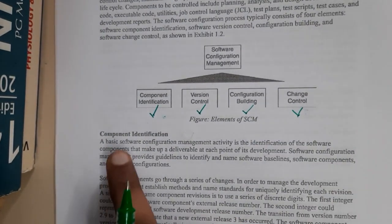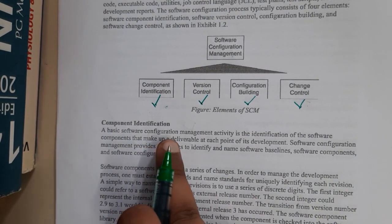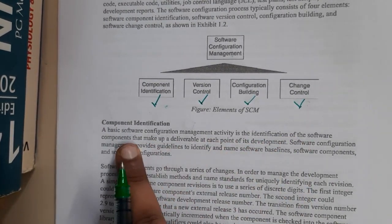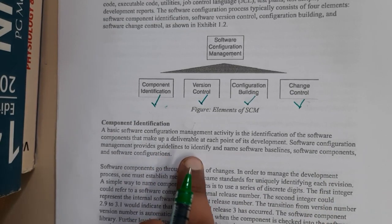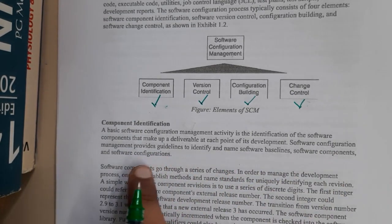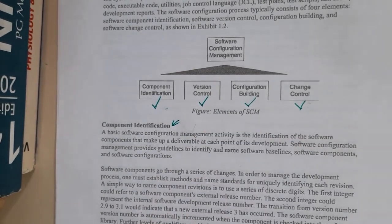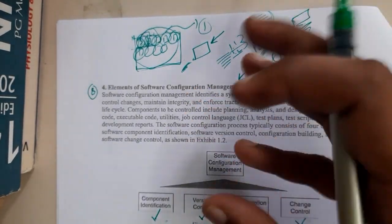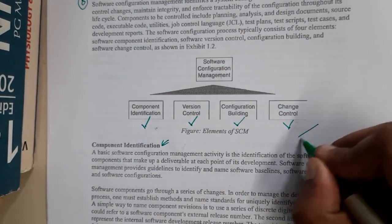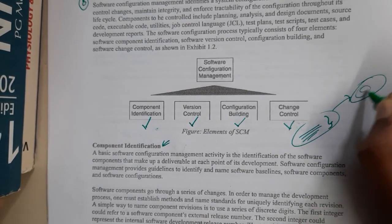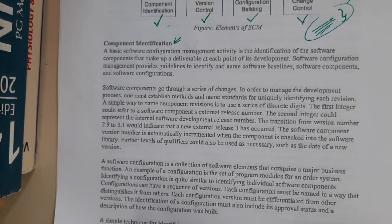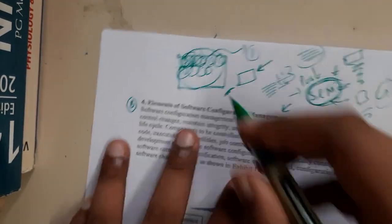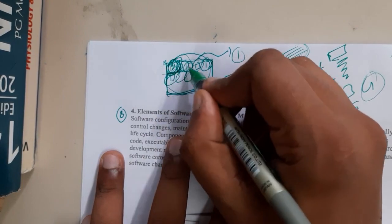Component identification is a basic SCM activity — it involves identifying the software components that make up a deliverable at each point of development. SCM provides guidelines to identify and name software baselines and components. The SCM names files and folders properly so that any new team member can understand the previous code. He takes care of all naming conventions and version names, like going from 2.9 to 3.1, making it clear for co-workers.